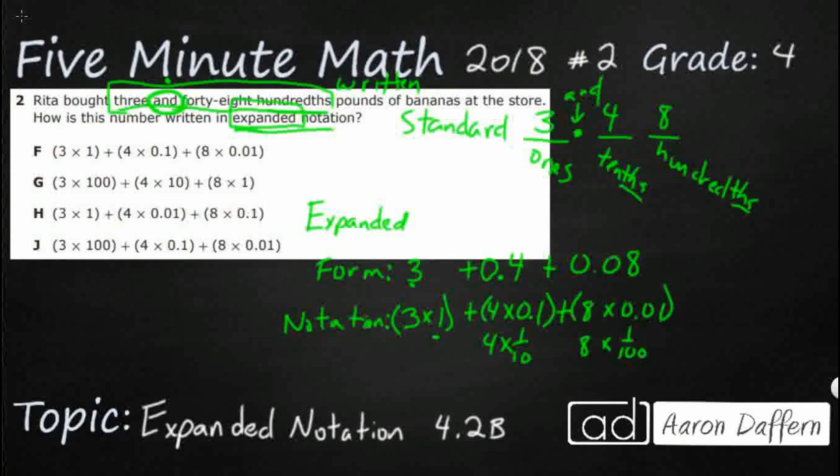So our problem up here has decimals. Let's take a look at that. G and J are automatically gone. F looks good in the tenth spot. And so what we're looking here is that looks wrong right there. Those two are switched. So actually what we need right here is our answer of F.